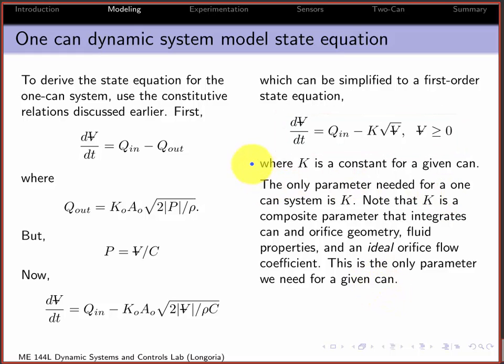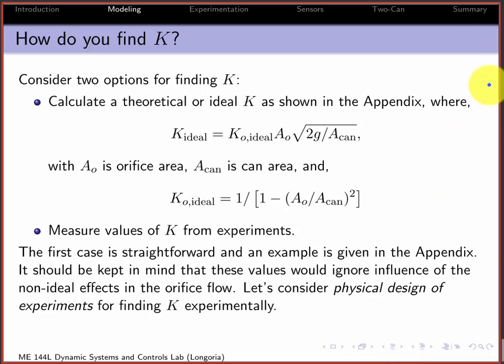The nice thing about this system is K now, if we kind of make it a composite parameter, that's the only parameter we need to find. Now we can think about experiments that we could design to find K.